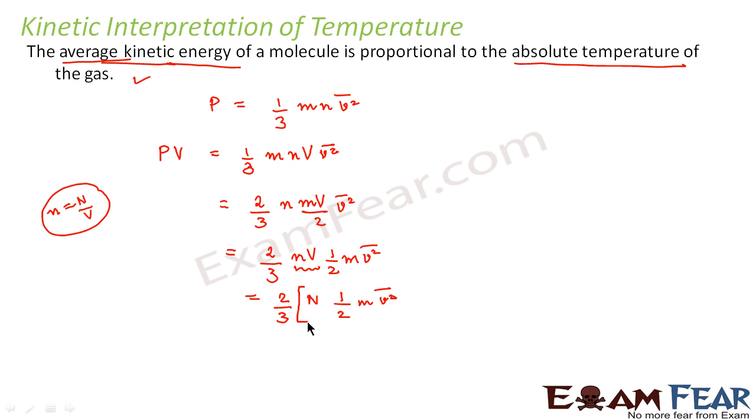Now look at this carefully. So what is this? Capital N times half m v square. That means total number of molecules multiplied by the kinetic energy. This is the number of molecules in the gas sample, and half m v square is the average kinetic energy. So this becomes equal to PV equals 2/3 E.